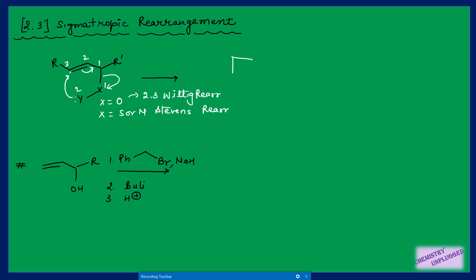In the transition state, two bonds remain intact, the pi bond breaks (denoted by dashed lines), the C–X bond also breaks (dashed lines), and a new bond forms (also shown by dashed lines). The R and R' substituents are drawn going in the exo direction to give this structure more stability.